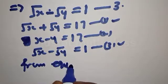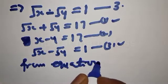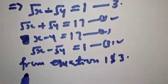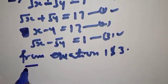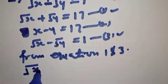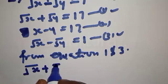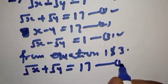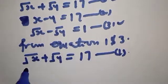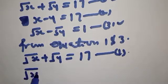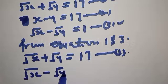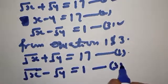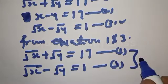From equation 1 we have square root of X plus square root of Y equals 17. Equation 3 is square root of X minus square root of Y equals 1. Let's add equations 1 and 3 together.